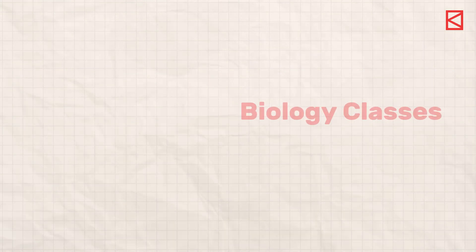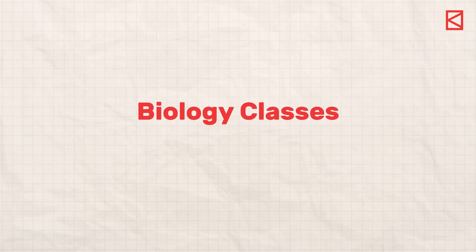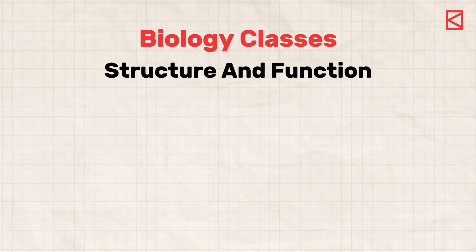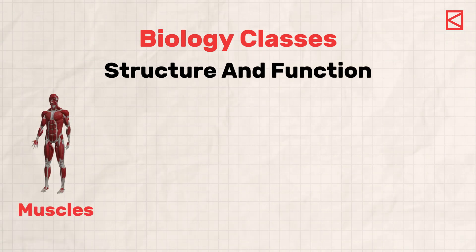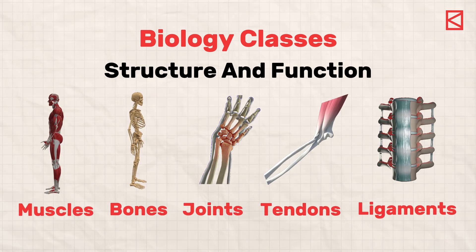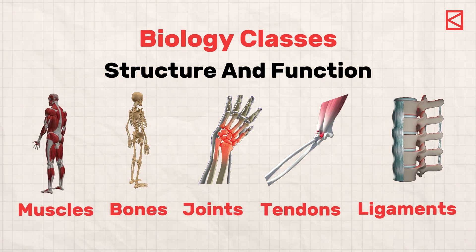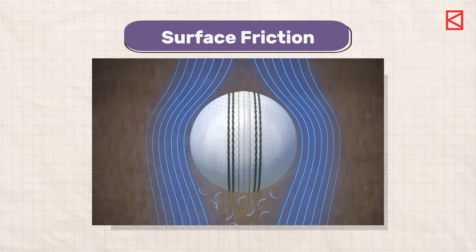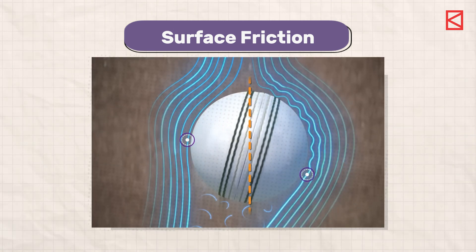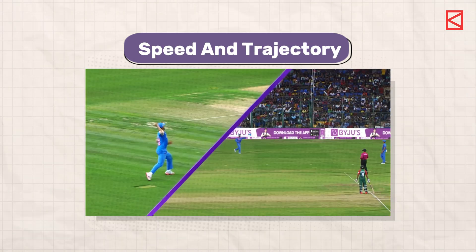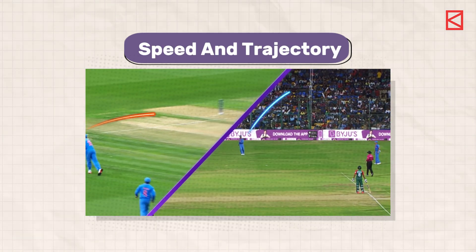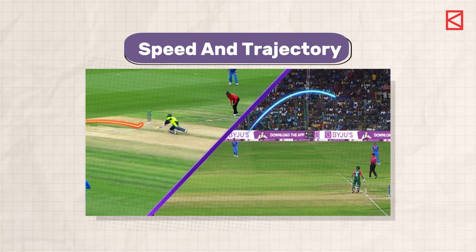Additionally, you will have biology classes where you study the structure and function of muscles, bones, joints, tendons, and ligaments involved in bowling. These are just the theory classes. Every week you will have 2–3 hours of lab sessions too, where you need to calculate the surface friction of a given ball, find the speed, trajectory of the thrown ball, and more.